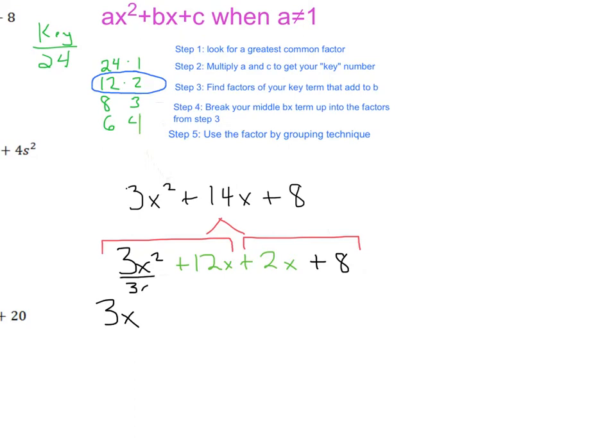Those have a greatest common factor of 3x, right? So again, that's like when I factor, that's like dividing each of these terms by 3x. What's left in there? 3x squared divided by 3x is an x. And then 12 divided by 3 is a positive 4. And you can see that these x's are going to cancel out over here.